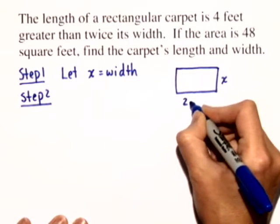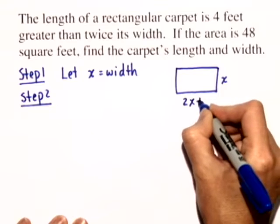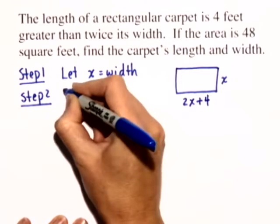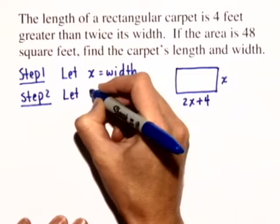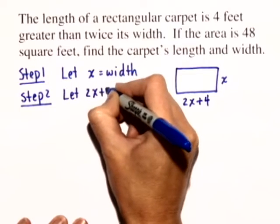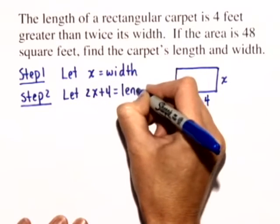So twice the width would be 2x, and 4 feet greater than that is plus 4. For step 2, we'll let 2x plus 4 equal the length.